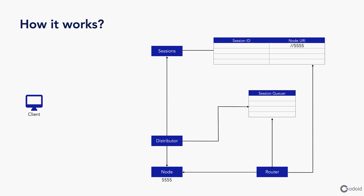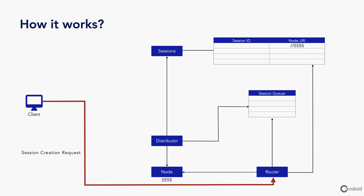Now it is time to learn how distributed execution works. Let us say the Selenium client sends a session creation request to the distributed execution setup. The session request goes to the router. The router adds the session request to the session queueer. Then the distributor picks up the session creation request and sends the session information to sessions. Whichever node is free for the session creation request, it maps the session ID. As soon as the session is mapped with the node URI, the browser is launched and the session is created successfully.